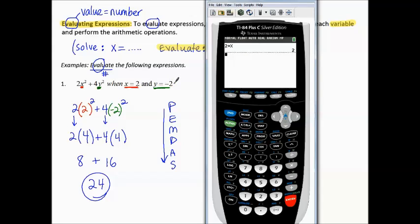Negative 2, store. Now there's no quick button for y, so I have to get to the y by pressing the green alpha button first. Alpha, y, enter. Now I can type this expression. 2x² + 4, alpha, y, squared, enter. And see it gives me 24.